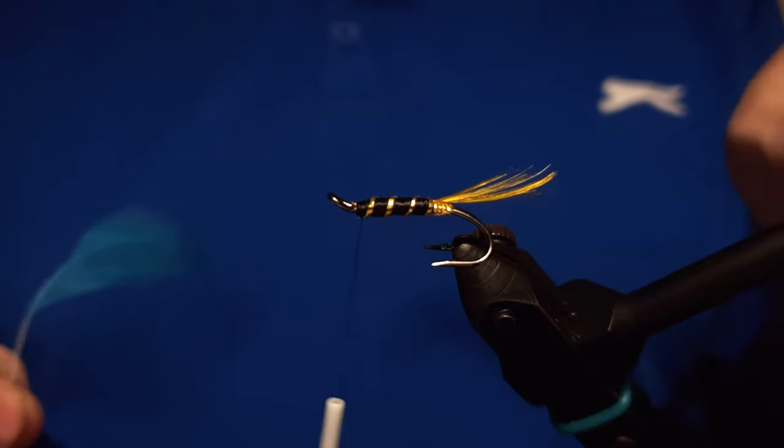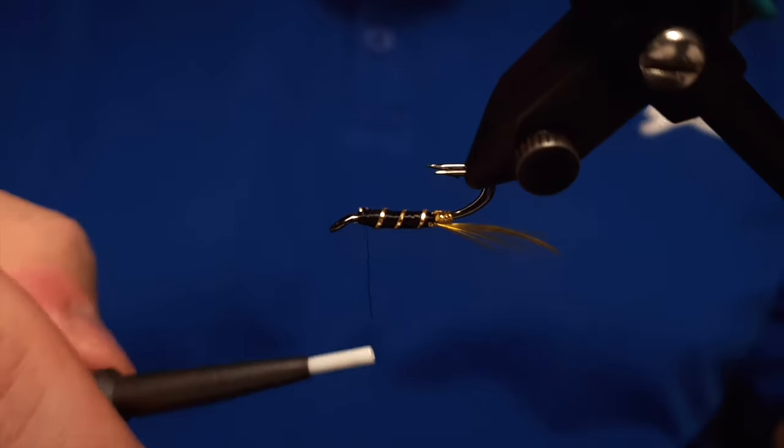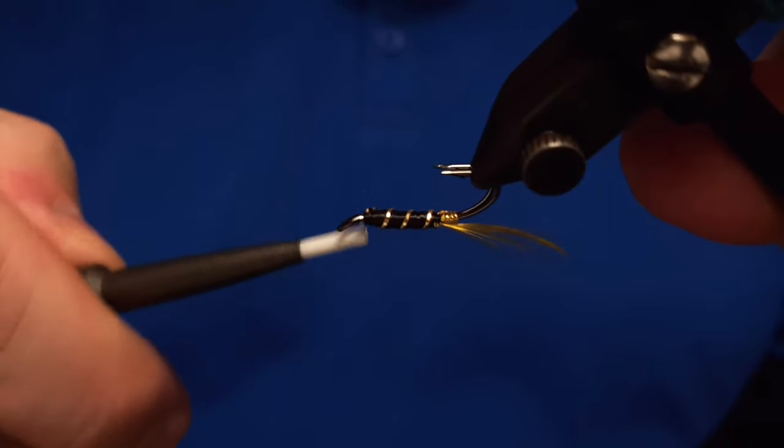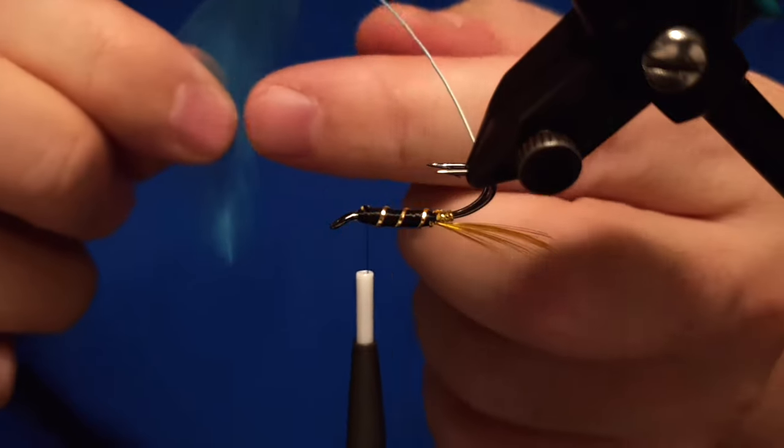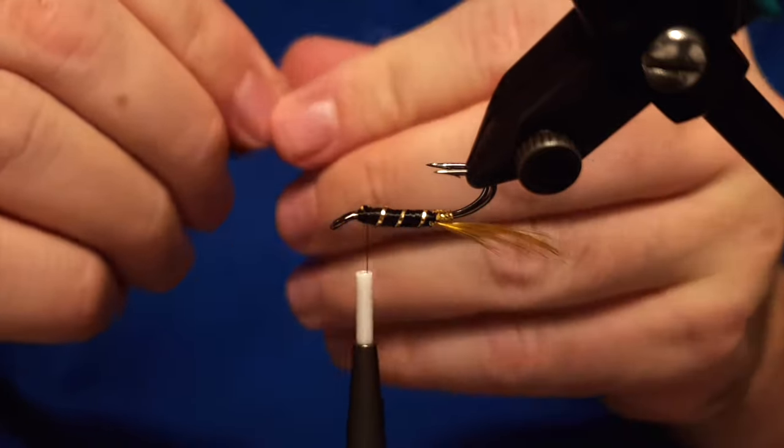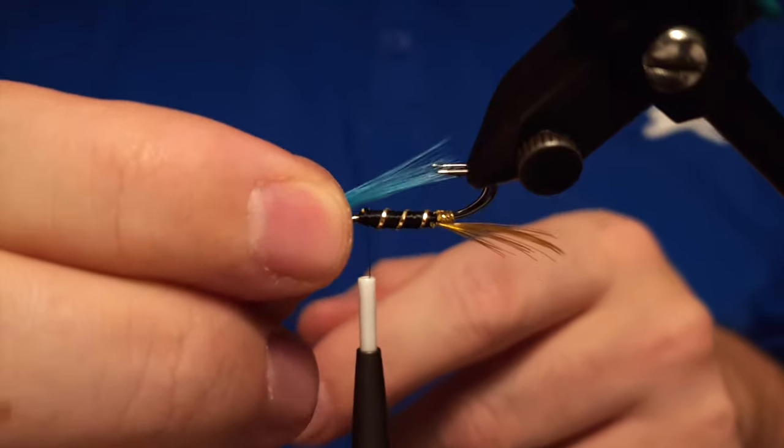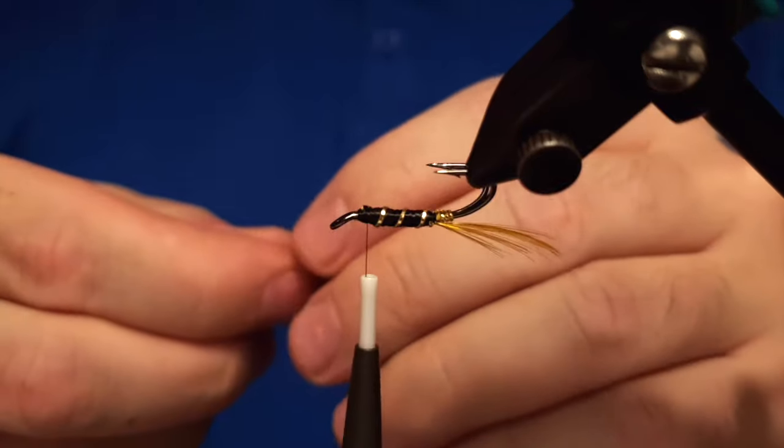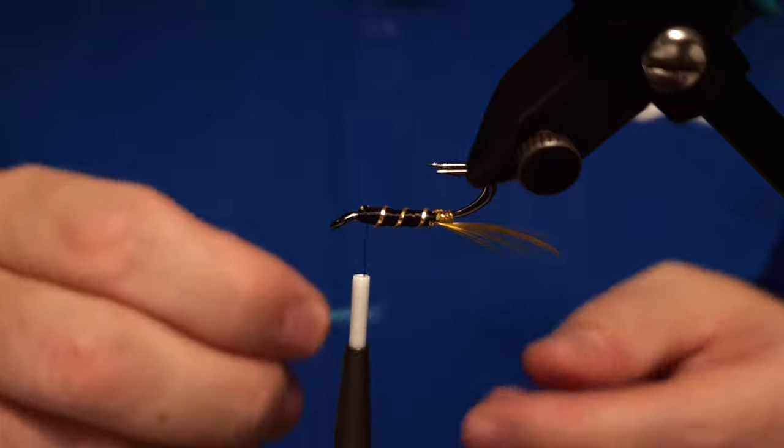Now it comes to the beard or the collar or the hackle. We are not going to do a hackle on this one, the beard will be just enough and we are using a light blue rooster or cock feather. Just take it off like this quickly then we measure out the length of the fibers and it's okay if the end of the fibers are touching the barb of the hook.